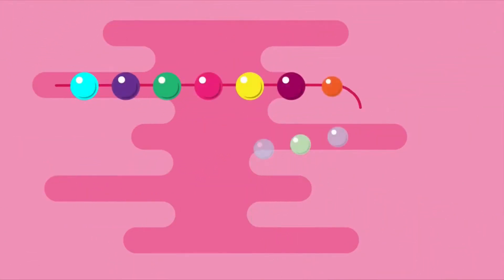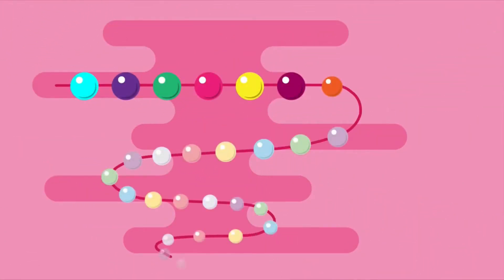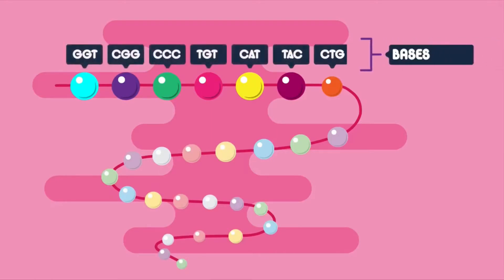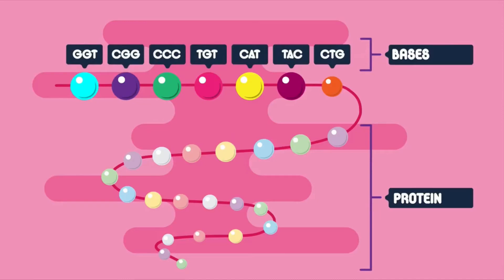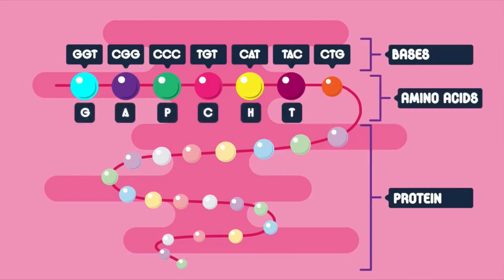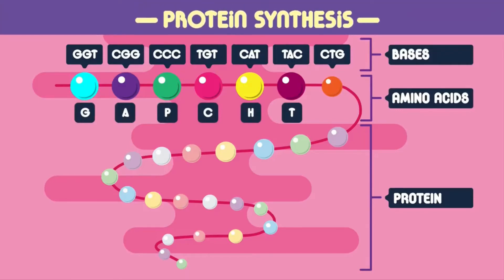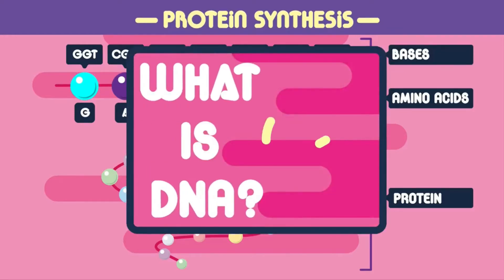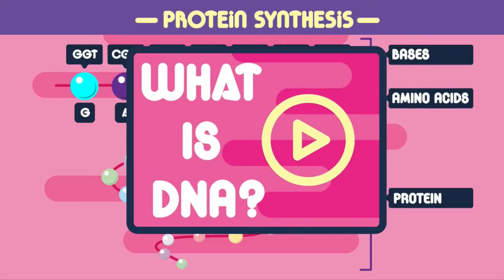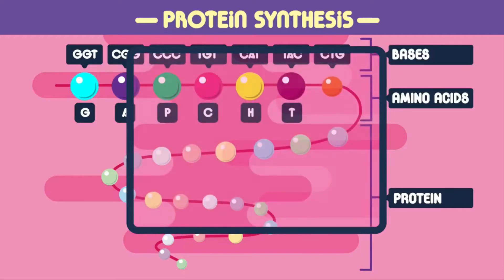Proteins are made of a long chain of amino acids which has been coded for by DNA. The order of the bases of DNA determines which protein is made by coding for a specific order of amino acids. This is protein synthesis and in this video we're going to look at how it works. You may want to watch our What is DNA video first to remind yourself all about DNA.